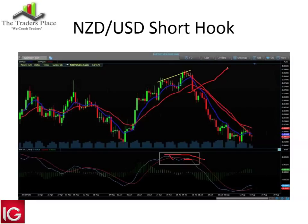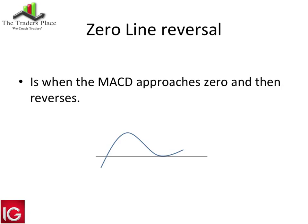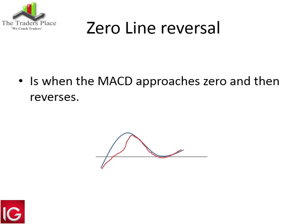Zero line reversals — I quite enjoy this one. It's when the MACD approaches zero and then reverses. The MACD crosses up, comes down, just tips the zero line, and continues in its previous direction. All that's happened is the 12 and 26 exponential moving averages have come together and touched. Anyone who's used moving averages will understand — the MACD tells me exactly that without having to look at the moving averages directly.